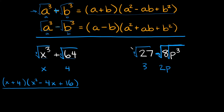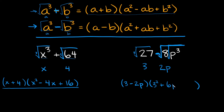As you can see, we're subtracting here, so that means we're going to use this second formula with the subtraction. This is going to be equal to A minus B — remember the first term is your A and the second term is your B — so here we're going to have 3 minus 2p. Then in our other set of parentheses we're going to have A squared plus A times B plus B squared. So A squared is 3 squared, plus A times B which is 3 times 2p — 3 times 2 equals 6, so we have 6p — and then plus B squared, so plus 2p squared.